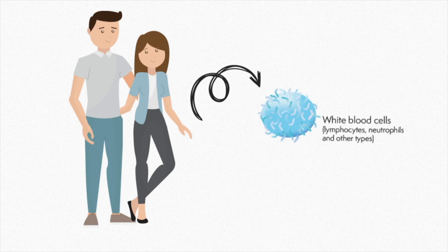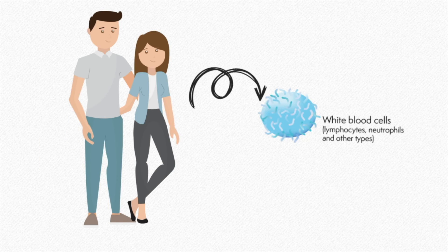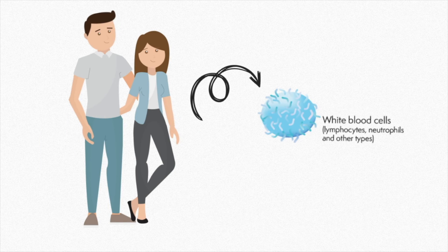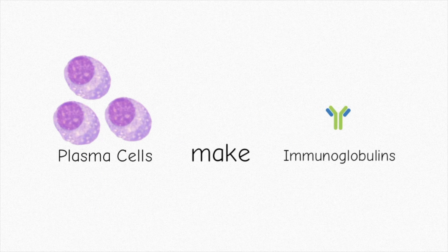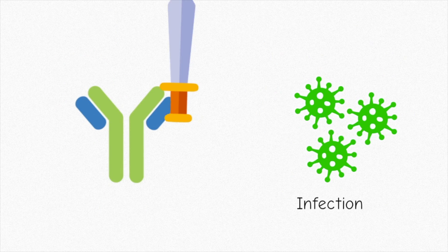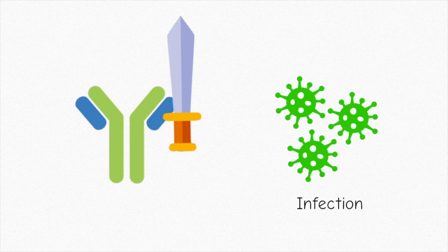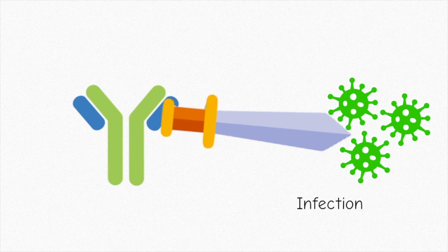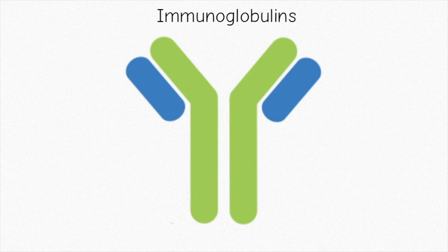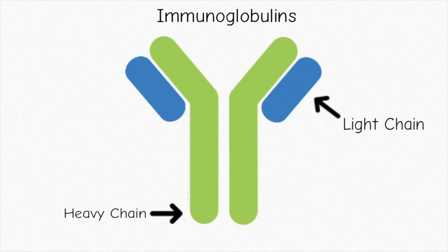Our bodies have white blood cells, and one of those types of white blood cells are plasma cells. Plasma cells make immunoglobulins, which help protect us from infections and illness. Immunoglobulins consist of a heavy chain and a light chain. The light chain can either be kappa or lambda.